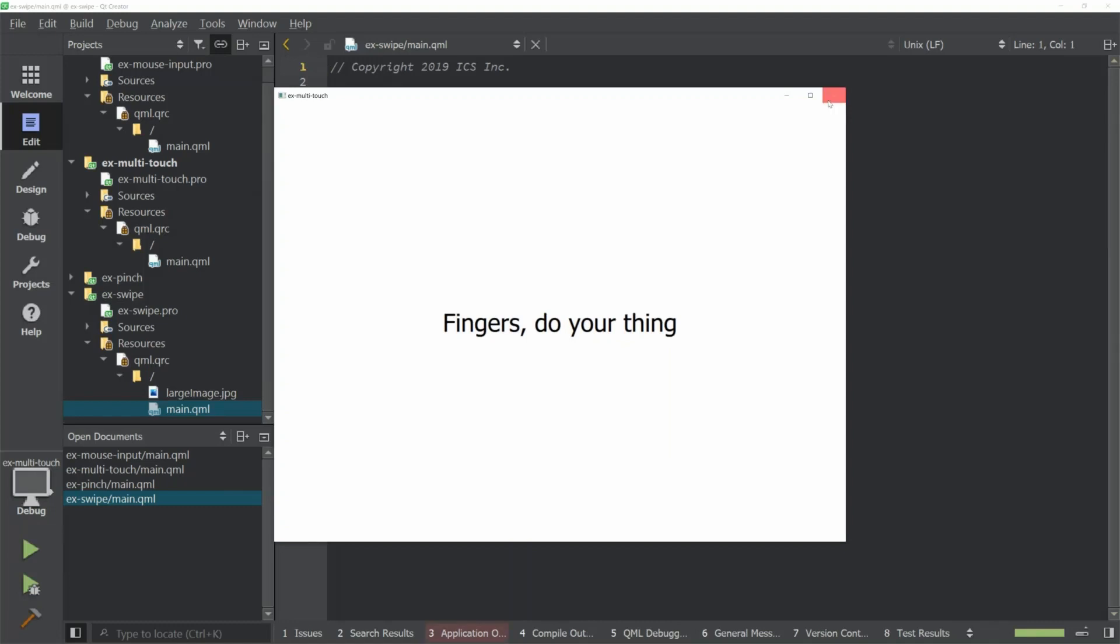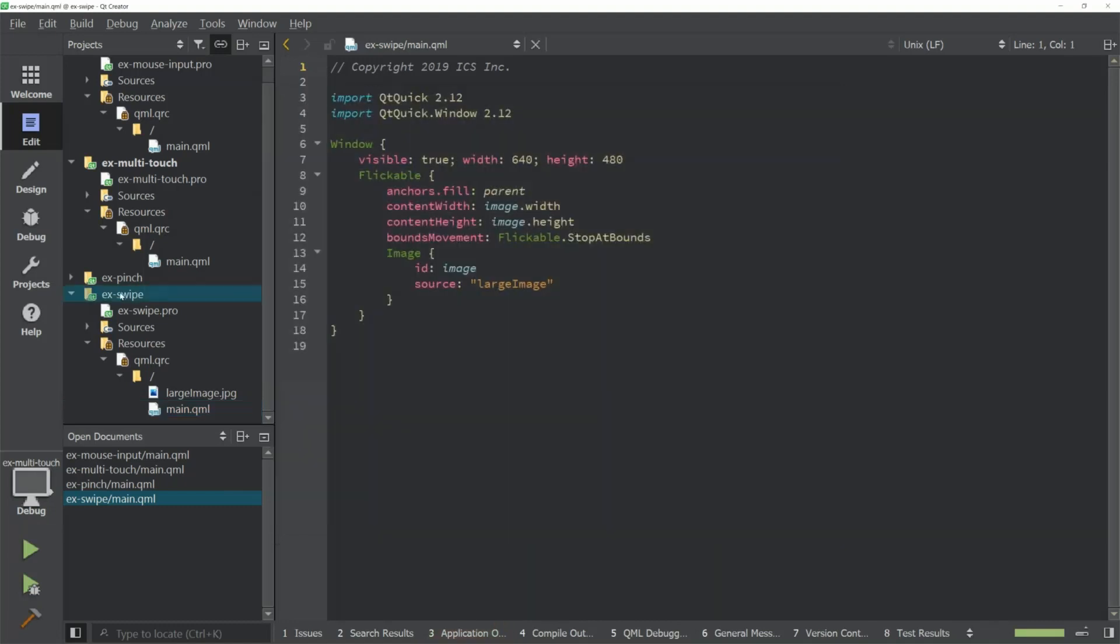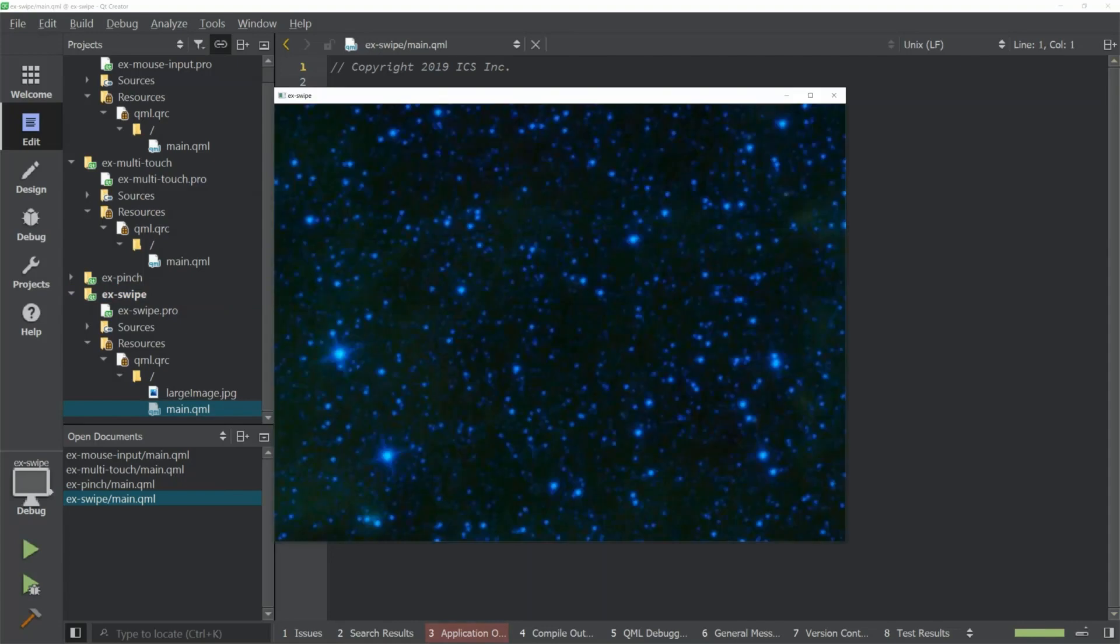When I run this, I forgot to set the active one. When I run this now, we'll see when this comes up, I have a large image, which is this JPEG image here. This takes a minute because it is a large image and it is in the resource file, so it does pack that into the executable. So here's my large image.